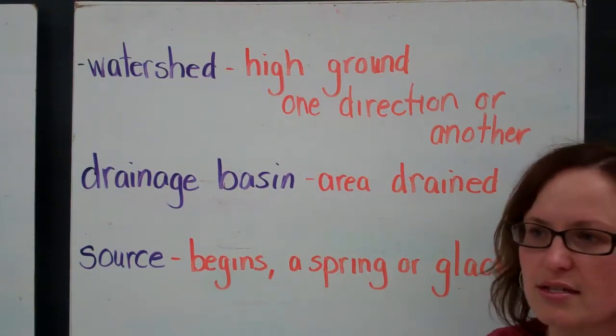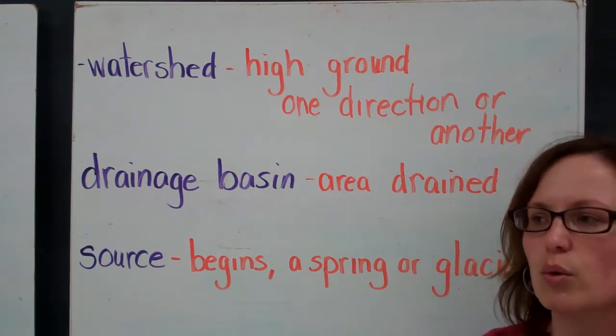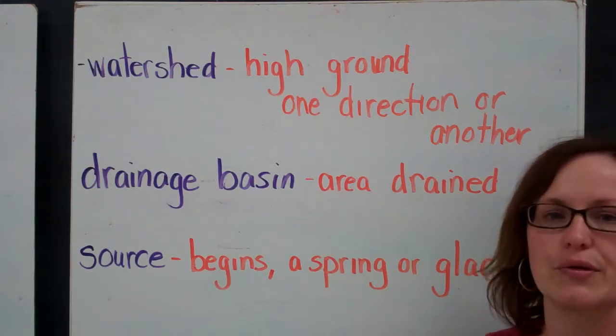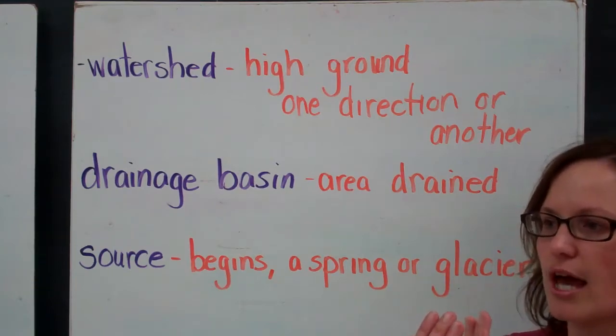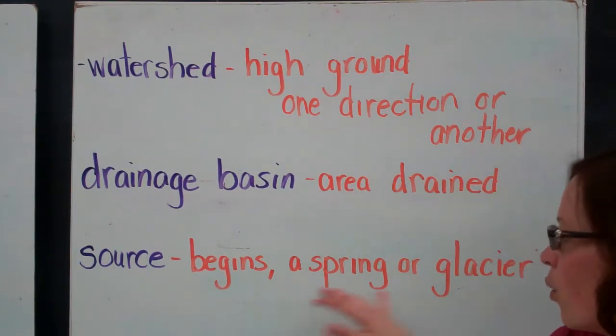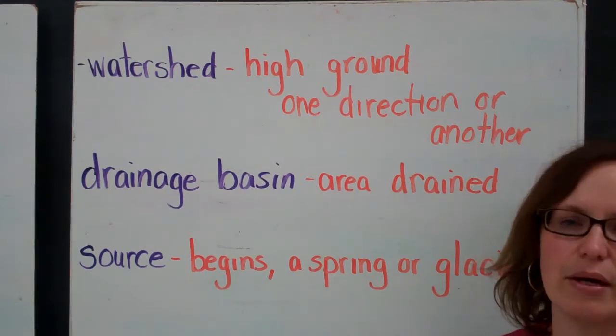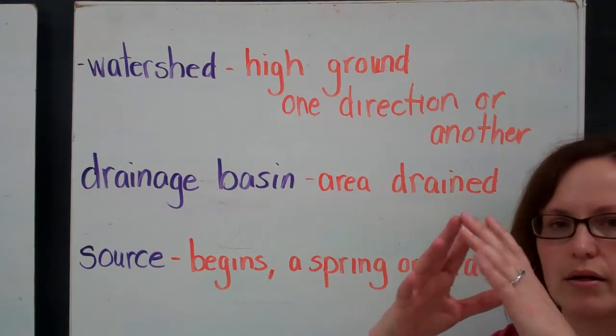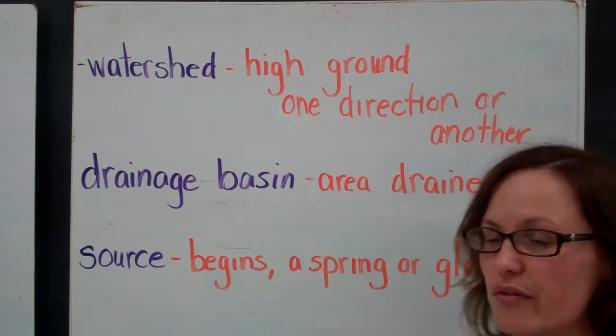Source. This is where a river begins, usually by a spring, a natural spring, which is water coming from below the earth's crust that bubbles to the surface and then depending on the watershed or the headwaters it flows in the direction it needs to go. Or a natural glacier, so if we think of the top of a mountain as it melts as the seasons change, that water starts to come down from that elevation and flows into the river systems.